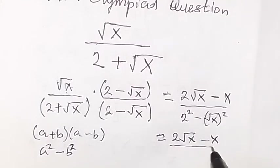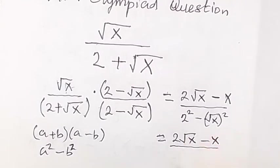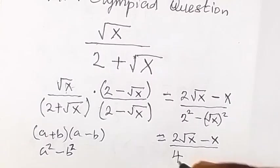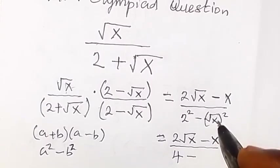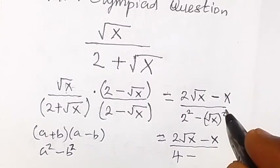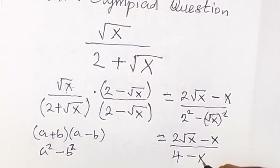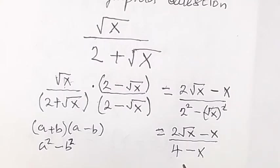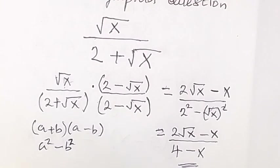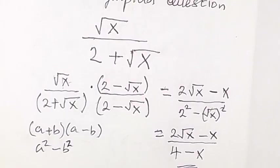This will be divided by 2 squared, which is 4, then minus root x squared. The square and square root cancel, and that's minus x. Here we have our solution ready. Thank you for joining us and also click on the like button. Thank you and have a nice day.